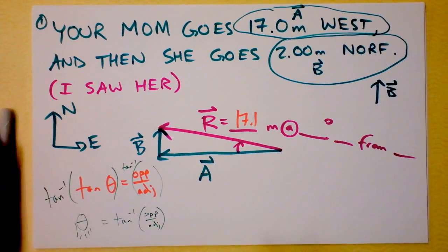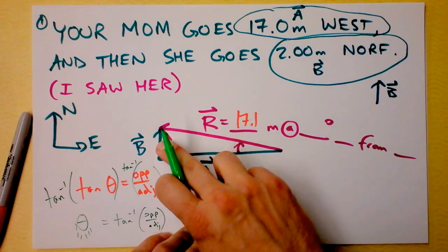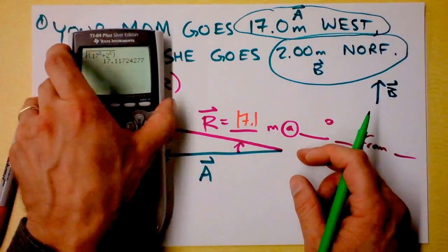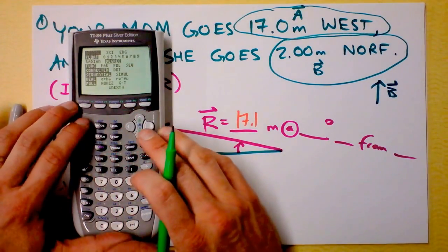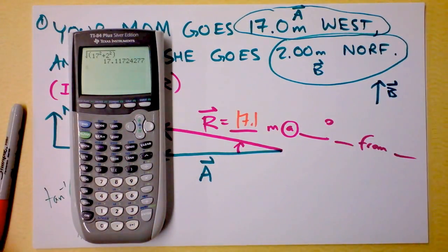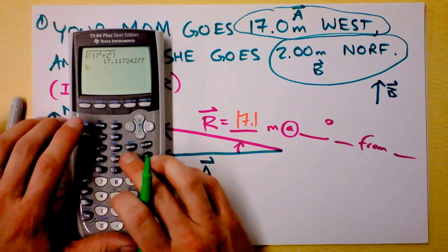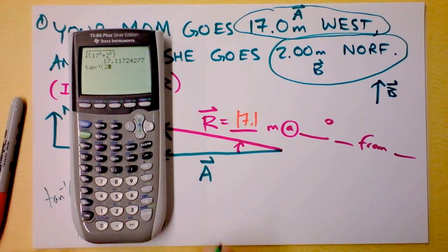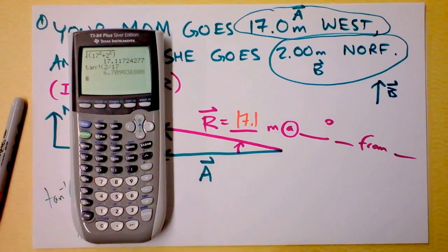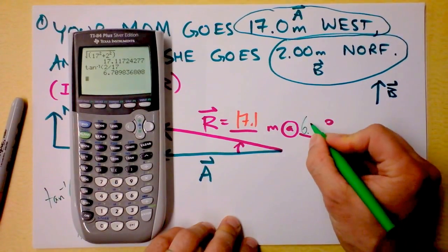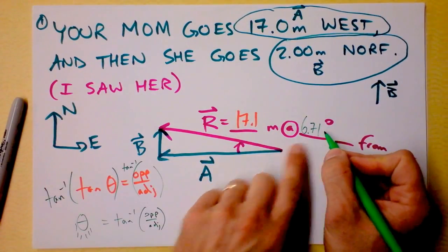But the right side is inverse tangent of opposite over adjacent. So you're supposed to take the inverse tangent of the opposite side, which in this case is 2 meters, over the adjacent side, which is 17 meters. Watch this. I'm gonna make sure that I'm in degree mode, because I wrote a degree there. So I take inverse tangent of 2, which was the opposite side, divided by the adjacent side, which is, oh my goodness, 6.71 degrees. That's not a lot of degrees.